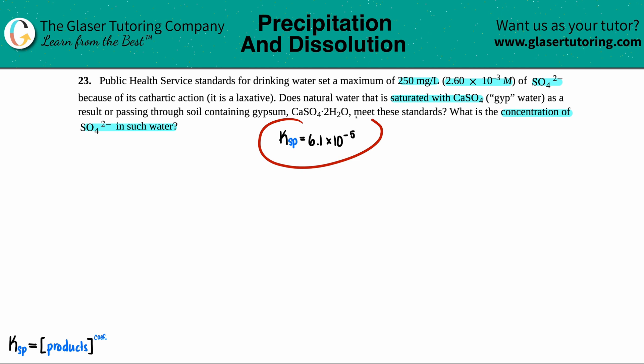So I went to the back of the textbook to find out what the solubility product, the Ksp is, of the gyp water, which is the calcium sulfate dihydrate, right? Dihydrate.